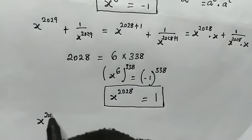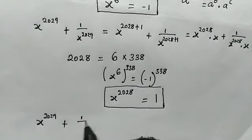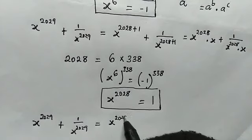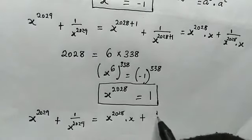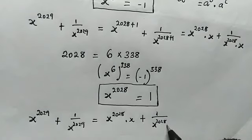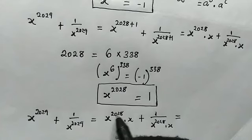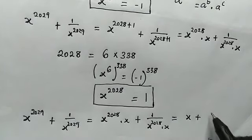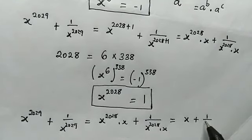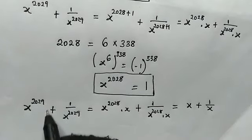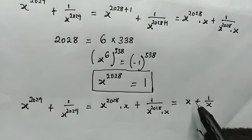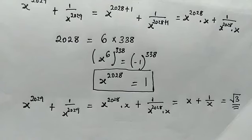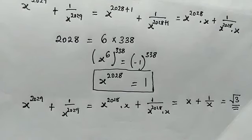Therefore the expression x to the power of 2029 plus 1 all over x to the power of 2029 equals x to the power of 2028 times x, plus 1 over x to the power of 2028 times x. Since x to the power of 2028 equals 1, this simplifies to x plus 1 over x, which equals root 3 — the same as the original equation. That's the answer! Thank you for watching, please subscribe, like, comment and share. Bye-bye.